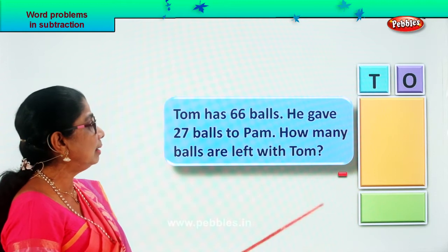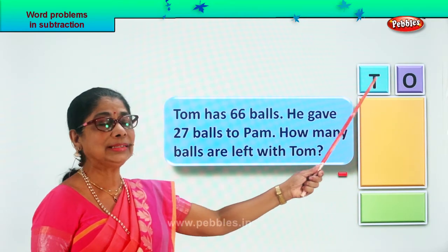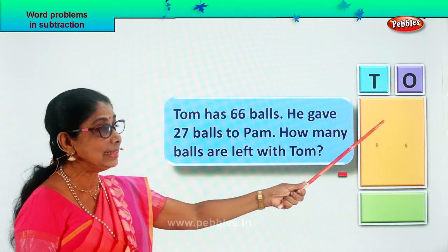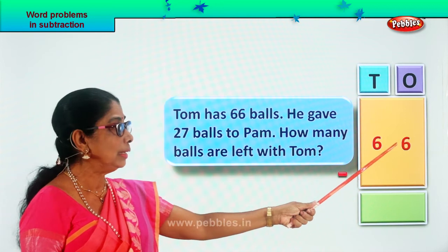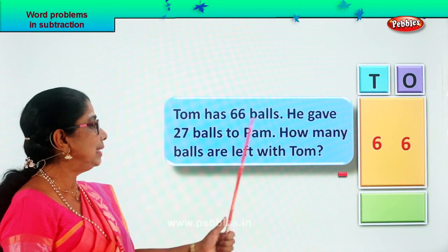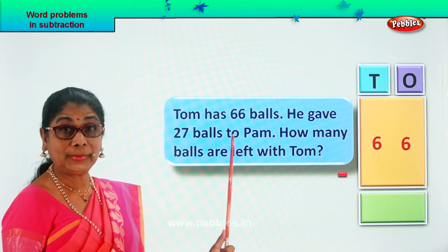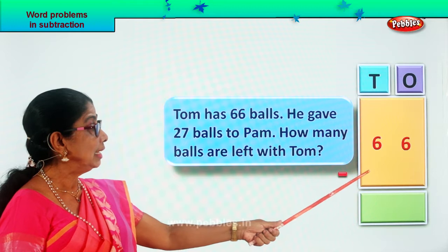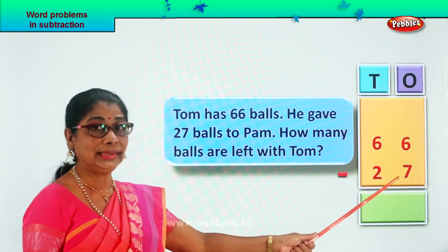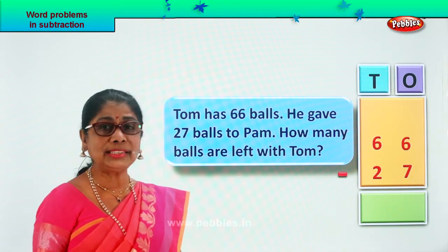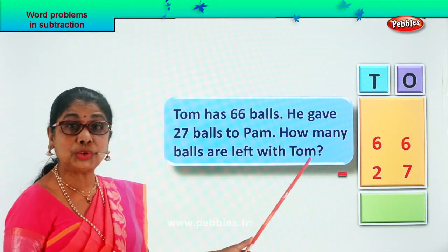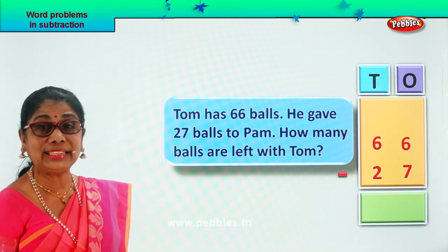Let's begin with putting the numbers down as one sentence. Number of balls Tom had: 66. So we put down 66. Number of balls he gave away to Pam, so minus 27. 66 minus 27 will give you the answer. How many balls are left with Tom now? Let's work it out.